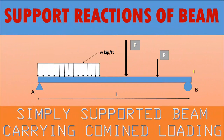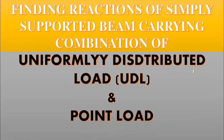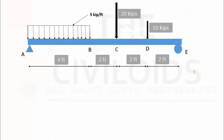In this video we are going to learn how to find the reaction of a simply supported beam carrying a combination of both loads — point load and uniformly distributed load — at the same time. For this purpose I have taken a simply supported beam of length 10 feet, carrying a uniformly distributed load of 5 kips per feet on the first 4 feet of the beam, and then two point loads of 20 kips and 10 kips at points C and D respectively.